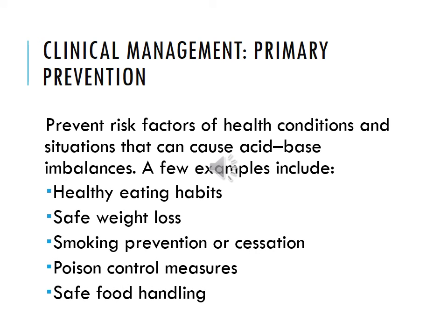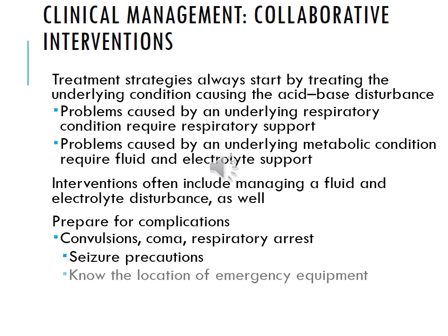For primary prevention, you want to prevent risk factors of health conditions that can cause acid-base imbalances: healthy eating habits, safe weight loss, smoking prevention or cessation, poison control measures, and safe food handling. Treatment strategies always include treating the underlying condition causing the acid-base disturbance. Problems caused by an underlying respiratory condition require respiratory support; if it's a metabolic condition, you need fluid and electrolyte support. Interventions often include managing a fluid and electrolyte disturbance as well.